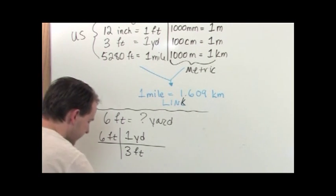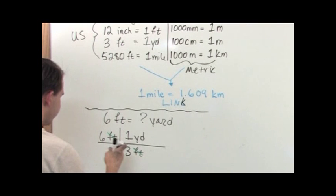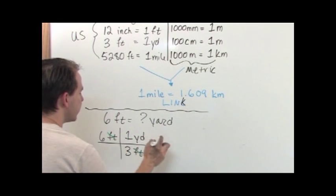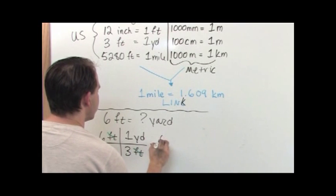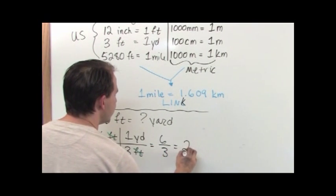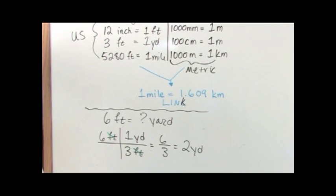I do that because, and precisely because, I want this foot to cancel with this foot here, leaving me with the yards I'm trying to get to. Now because I've canceled my units, I know I'm going to have yards. This is six times one on the top. So it's just six on the top divided by three on the bottom, which is of course two yards. So six feet is equal to two yards and that should make sense to you since you know that three feet is in a yard.